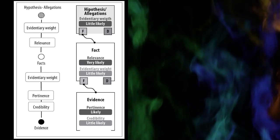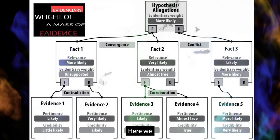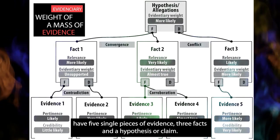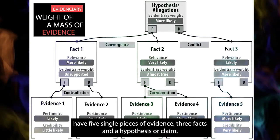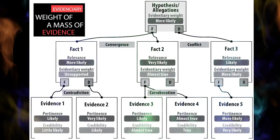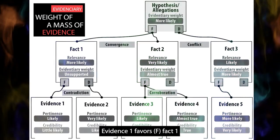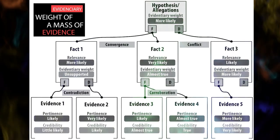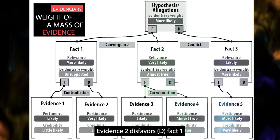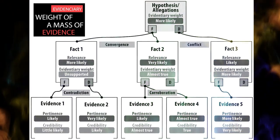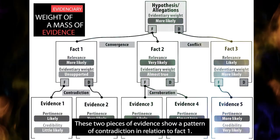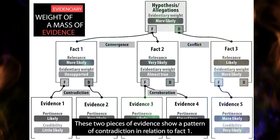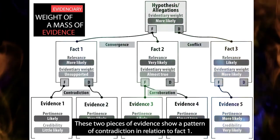Here we have five single pieces of evidence, three facts, and a hypothesis or claim. Evidence 1 favors Fact 1. Evidence 2 disfavors Fact 1. These two pieces of evidence show a pattern of contradiction in relation to Fact 1.